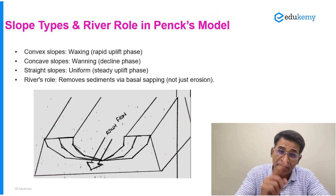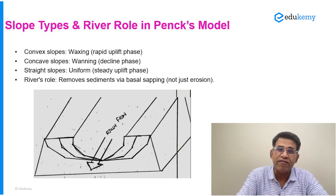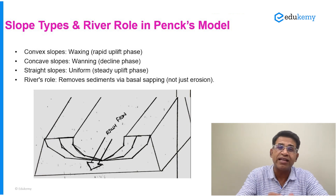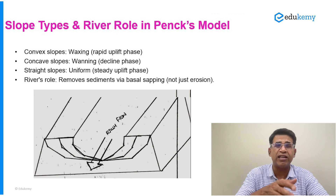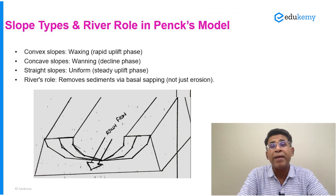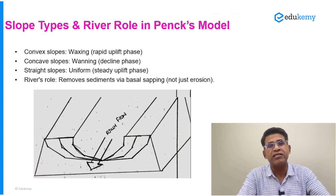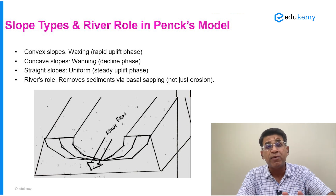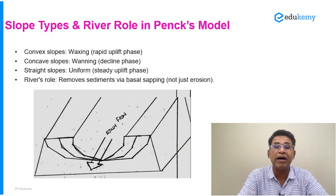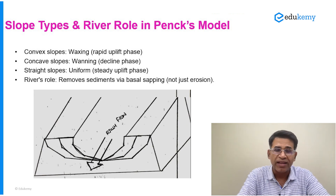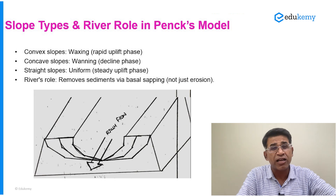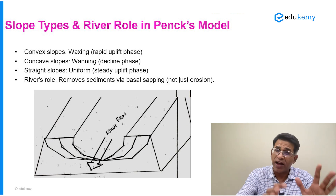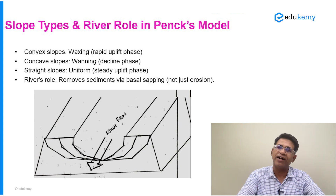The third important aspect is what Peng thinks about the role of rivers. For Davis, a river is an agent of erosion — it cuts and erodes. For Peng, a river is an agent of removal of sediments. He talks about the process of basal sapping, where the river removes sediments from the base of a slope.